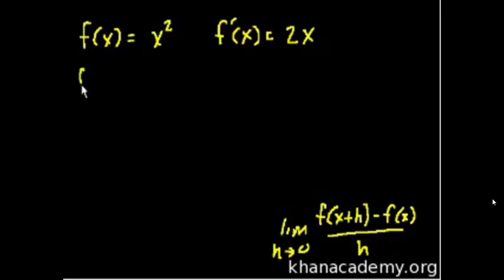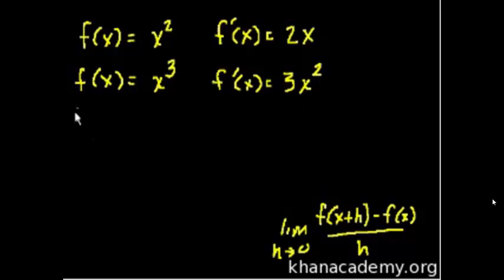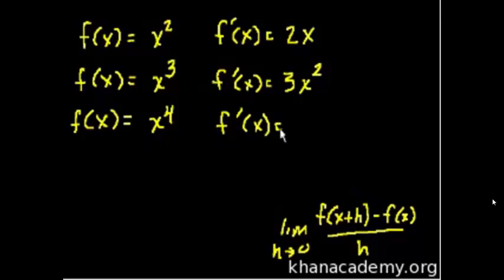But it turns out that if you have f of x is equal to x to the third, that the derivative is 3x squared, if f of x is equal to x to the fourth, well then the derivative is 4x to the third. I think you're starting to see a pattern here.